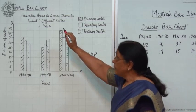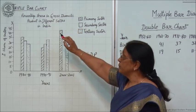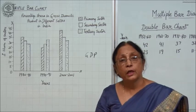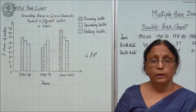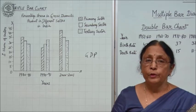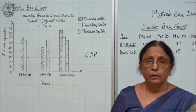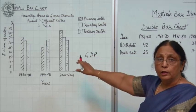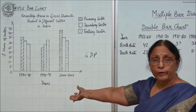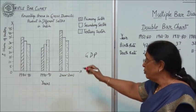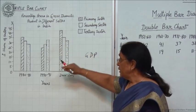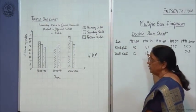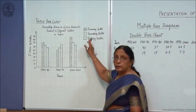This data gives the percentage share in GDP across different sectors in India — that means how much is the contribution of each sector, primary, secondary, and tertiary, in the GDP of India. This is the percentage share we are taking. Though it should be based on data so you can find out the length of the bars.